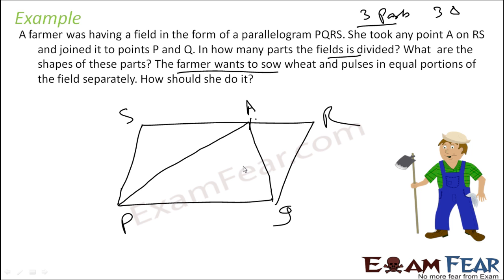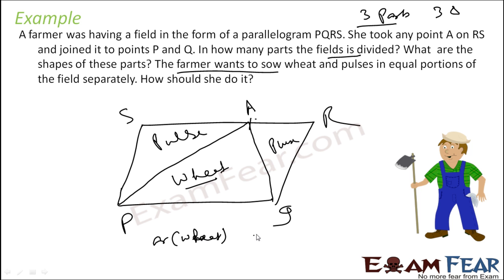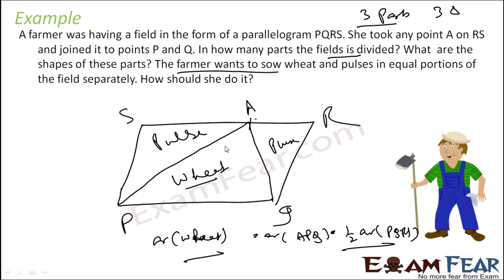So if wheat is in one region and pulse in another, we see that area of the wheat region equals half of area of triangle APQ and equals half of area of PQRS. So the farmer can either sow wheat here and the remaining part pulse, or sow pulse here and the remaining part wheat. It will be great. Thank you.